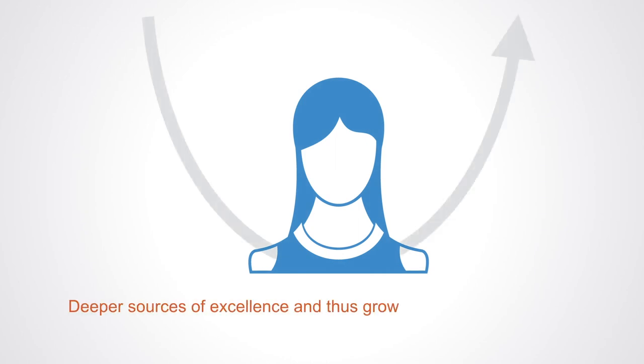At the end of the day, Theory U is trying to tap into the deeper sources of excellence and thus grow our leadership capacities. This has to do with the inner space that we operate from. It is a method that takes us through a process to improve our quality of attention and intention.